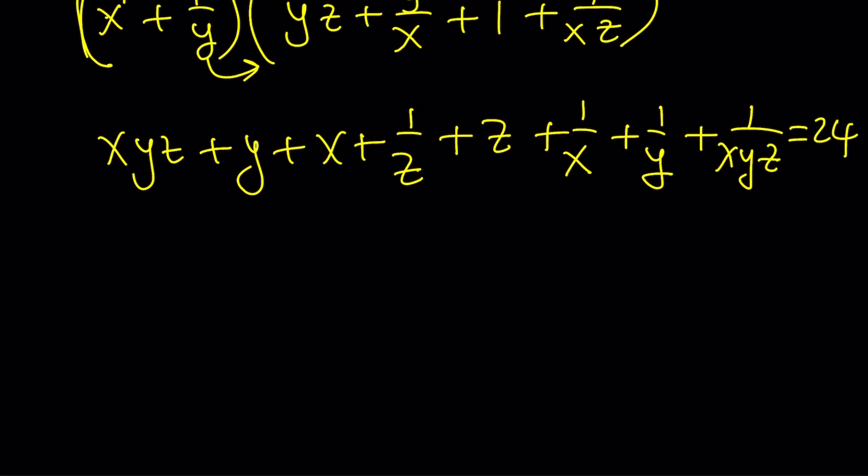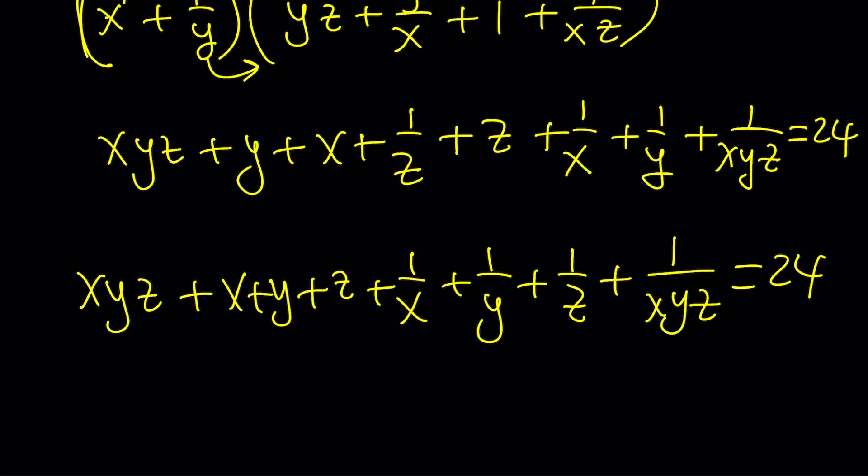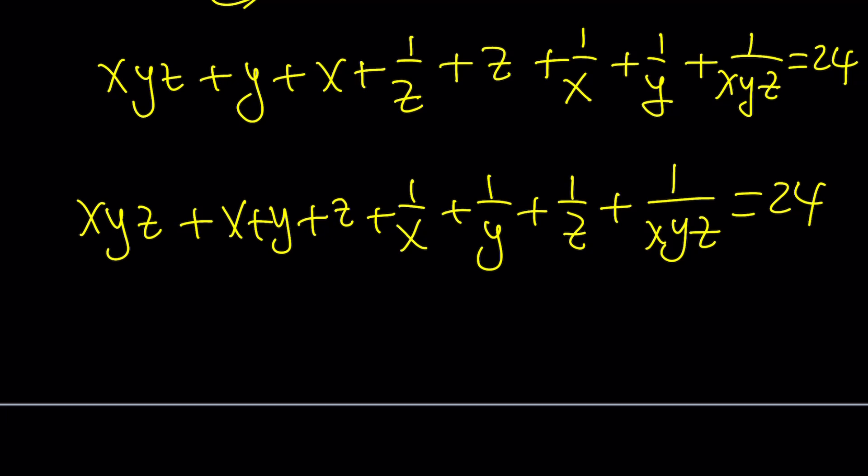Let's go ahead and rearrange the terms a little bit to make it look nicer. We have xyz. We have x plus y plus z. We have 1 over x plus 1 over y plus 1 over z, the sum of reciprocals. And finally, we have the reciprocal of the product, 1 over xyz. And the whole thing is equal to 24. Now again, you might be wondering, is this helpful at all? Kind of looks messy, right? We have the product, we have its reciprocal, we have the sum, we have the sum of reciprocals, so on and so forth. But hold on to this for now, because the next thing we're going to do is going to actually help us.